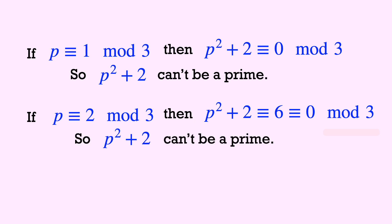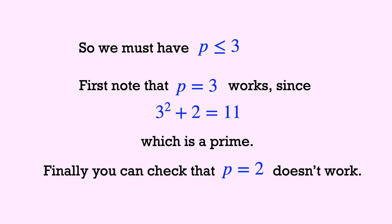So we've eliminated all cases where p is greater or equal to 4. So we're left that p must be less than or equal to 3 if it's going to work.